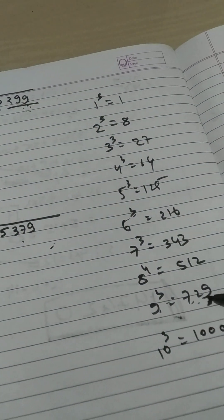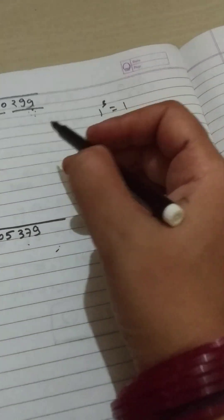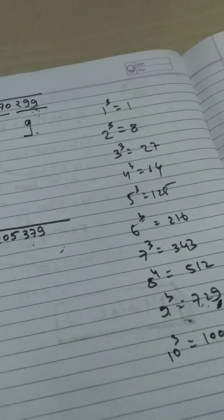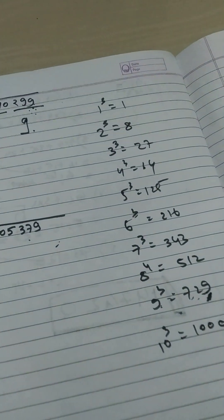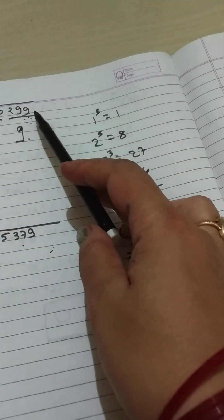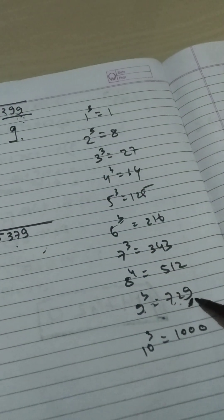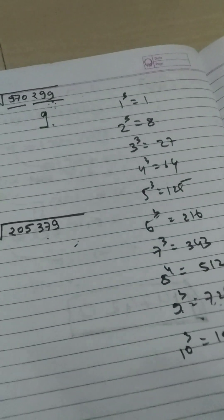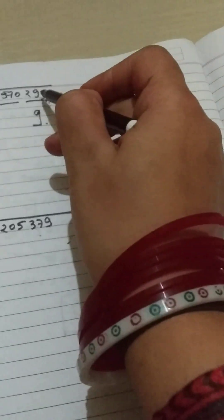We will write 9 here because 9³ has 729, and the unit digit is 9. So this 9 and this 9 is matching to each other, so we will keep 9 here. Now next, strike this number, the whole number.